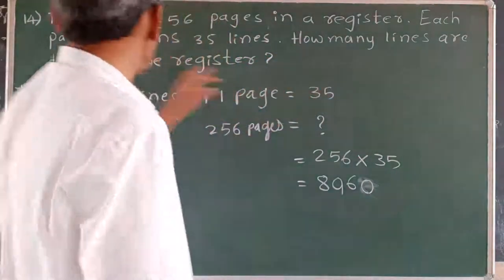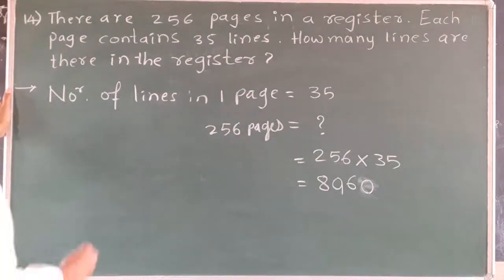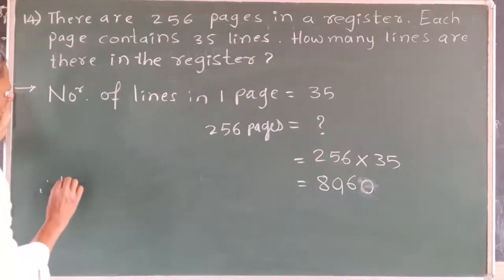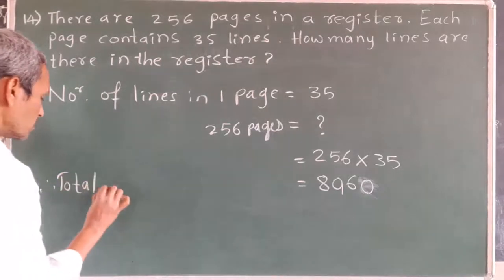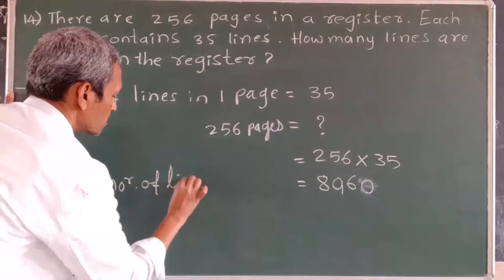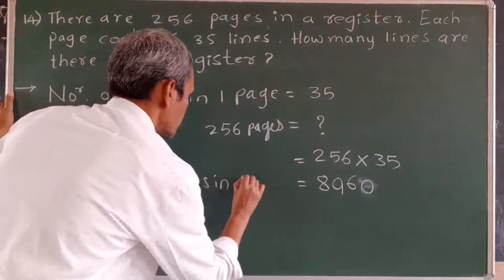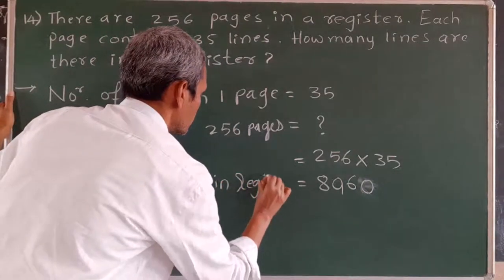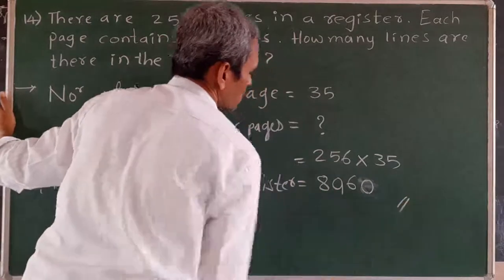How many lines are there in the register? Therefore, the total number of lines in the register is 8,960. This is the answer.